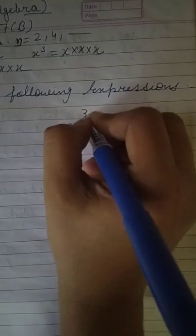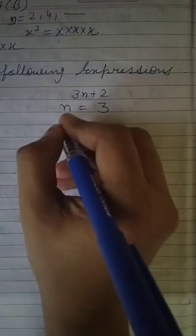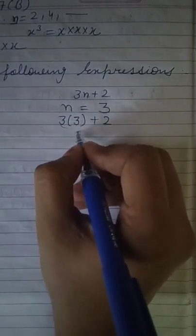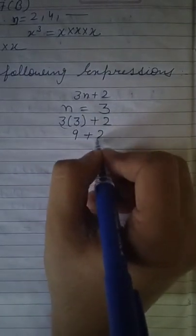Same expression 3n plus 2. In this I have to put n equal to 3. Means you have to replace n with 3. 3 into 3 is 9, plus 2 is 11.